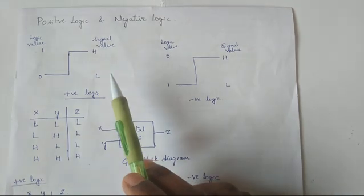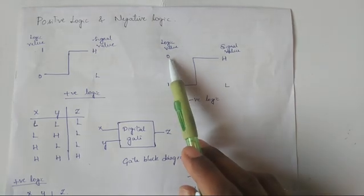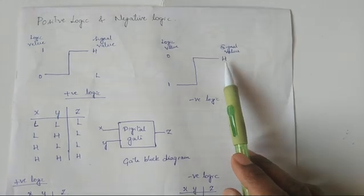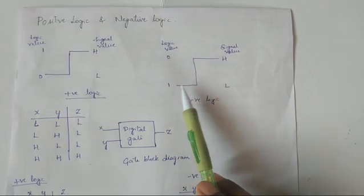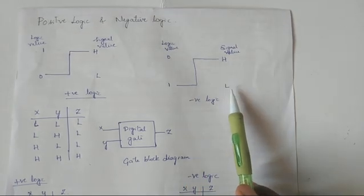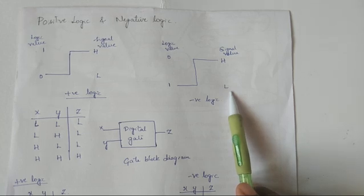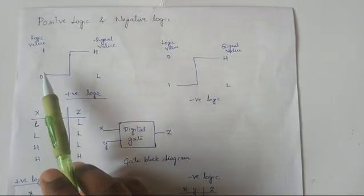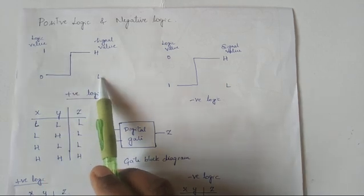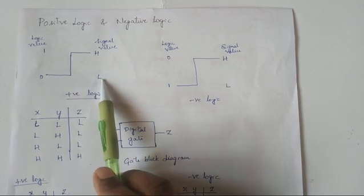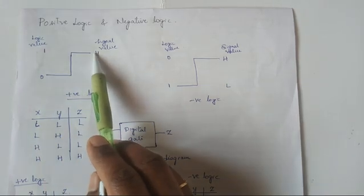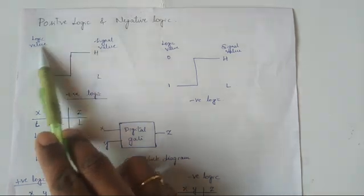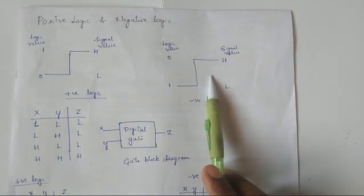In negative logic we choose 0 to represent the signal value H and we choose 1 to represent the signal value L. To summarize: representing 1 with H and 0 with L is positive logic — that is the default. The reverse of it is negative logic.